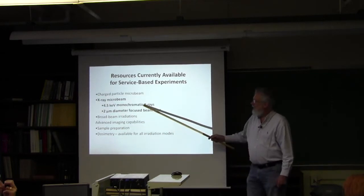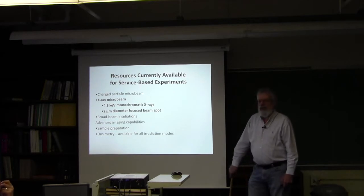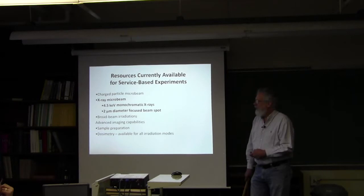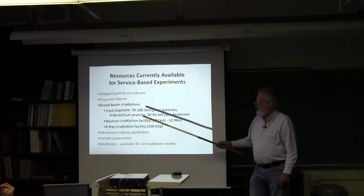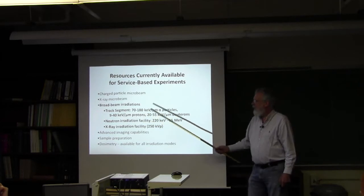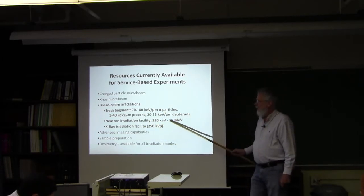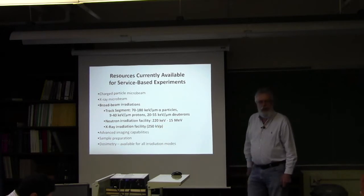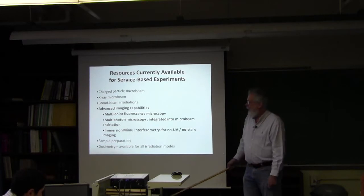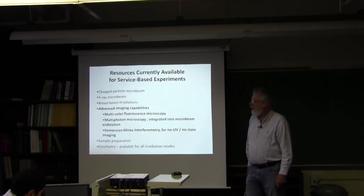We have 0.6 micron diameter spot, 10,000 cells per hour. We have the x-ray microbeam with monochromatic x-rays, 4.5 kV, 2 micrometer diameter spot. Broad beam radiations, track segment, alpha particles, protons and deuterons. We have a neutron facility with a wide range of mono energetic neutrons available. We have imaging systems to support the microbeam work.